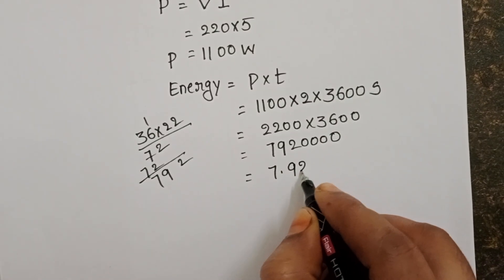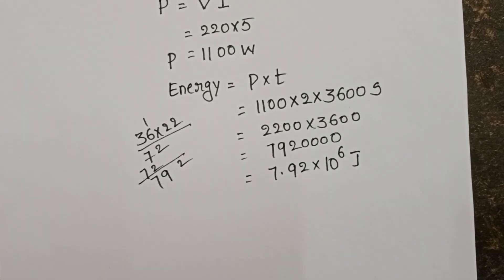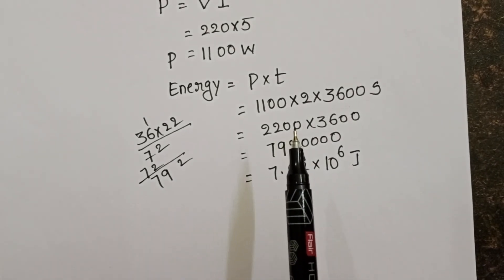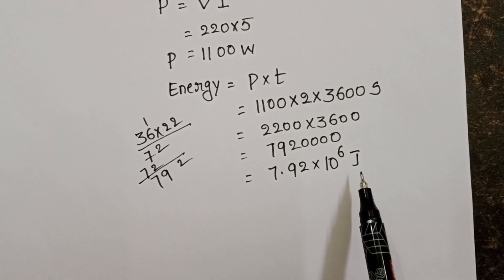This gives us 7.92 into 10 power 6 joules. Energy consumed by the electric motor is 7.92 into 10 power 6 joules.